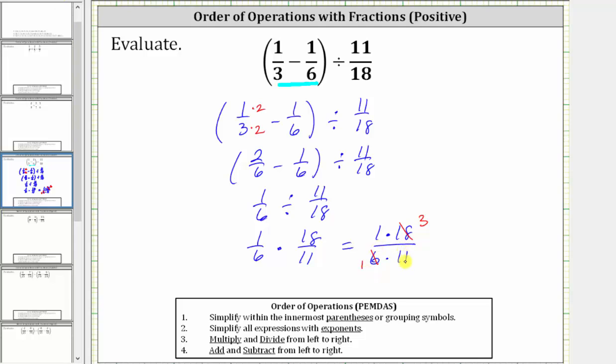Now the only common factor between the numerator and denominator is 1, so now we can multiply and know the fraction will be in simplified form. In the numerator, we have 1 times 3, which is 3. In the denominator, we have 1 times 11, which is 11. The given expression simplifies to 3/11. I hope you found this helpful.